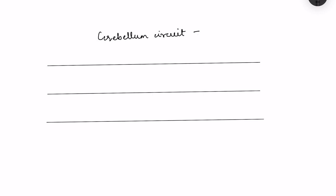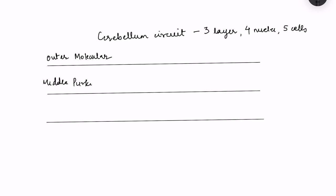Cerebral circuitry consists of three layers in the cerebral cortex, four deep cerebral nuclei, and five types of cells present in the cerebral cortex. Let us see what these layers, nuclei, and cells are and how they are interconnected. The three layers of the cerebral cortex are: the outer molecular layer, the middle Purkinje layer, and the innermost granular layer.